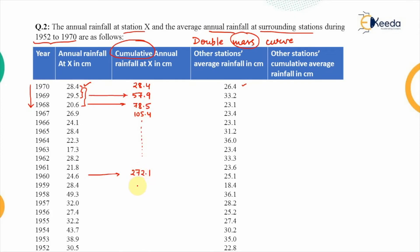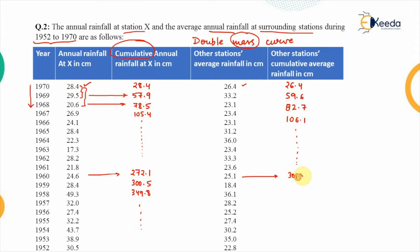At 1960, the cumulative rainfall was 272.1; the next year gives 300.5, then 349.8, and so on. For the other stations, cumulative values are similarly computed: 26.4, then 59.6, then 82.7, then 106.1, continuing in the same way. Corresponding to the 1960 period, the other-stations cumulative value is 301.8, then 320.2, then 356.3, and so on.